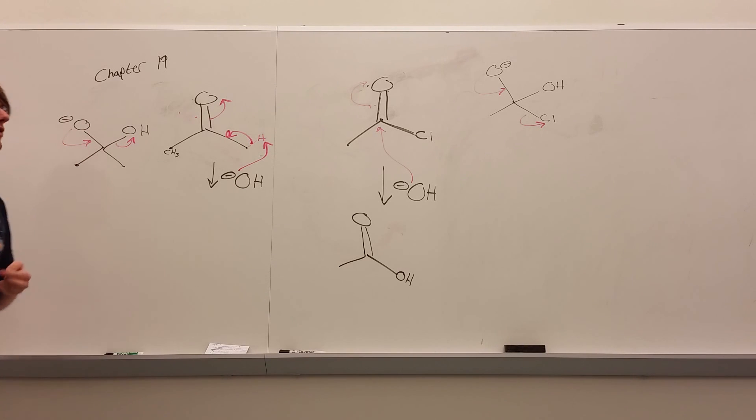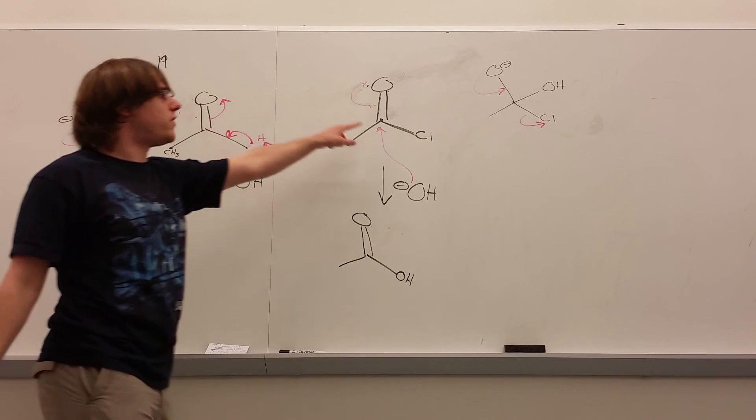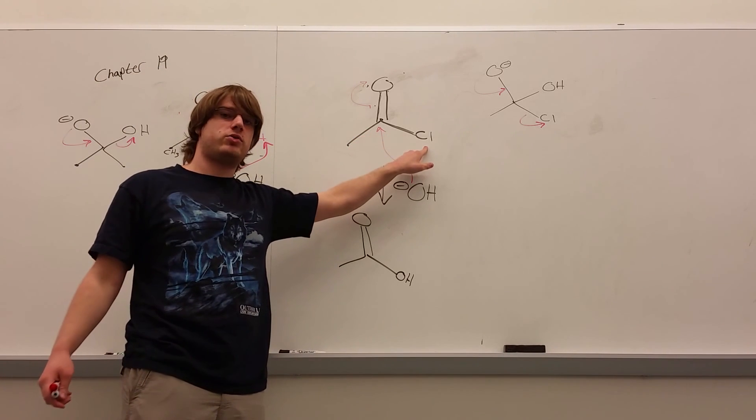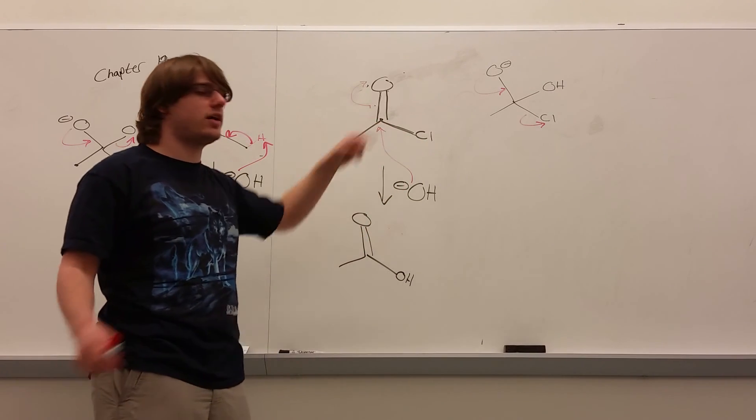So that's the key difference. Either you have a carbonyl with nothing but carbons or hydrogens, or you have a carbonyl that has a good leaving group attached to it at the same time. In that case, you might not always form the enolate. You might kick out that leaving group instead.